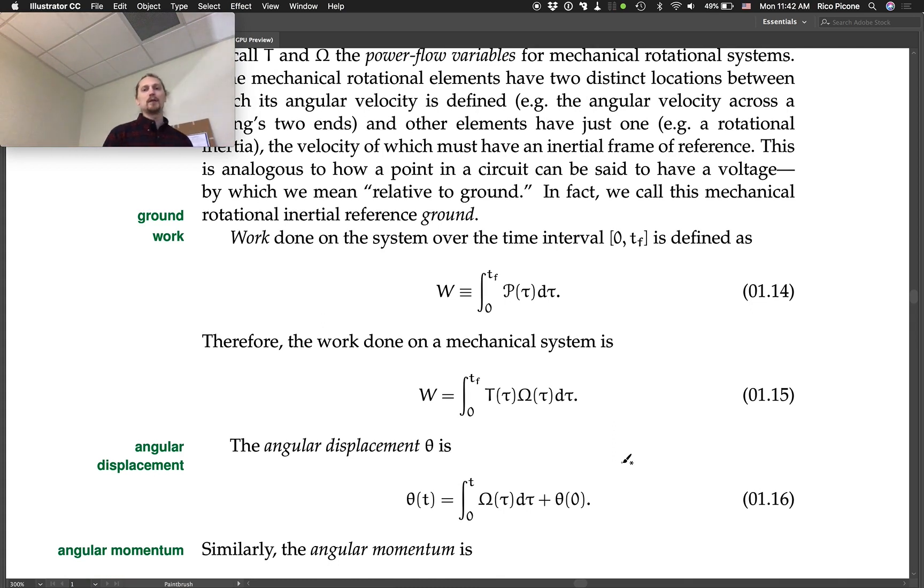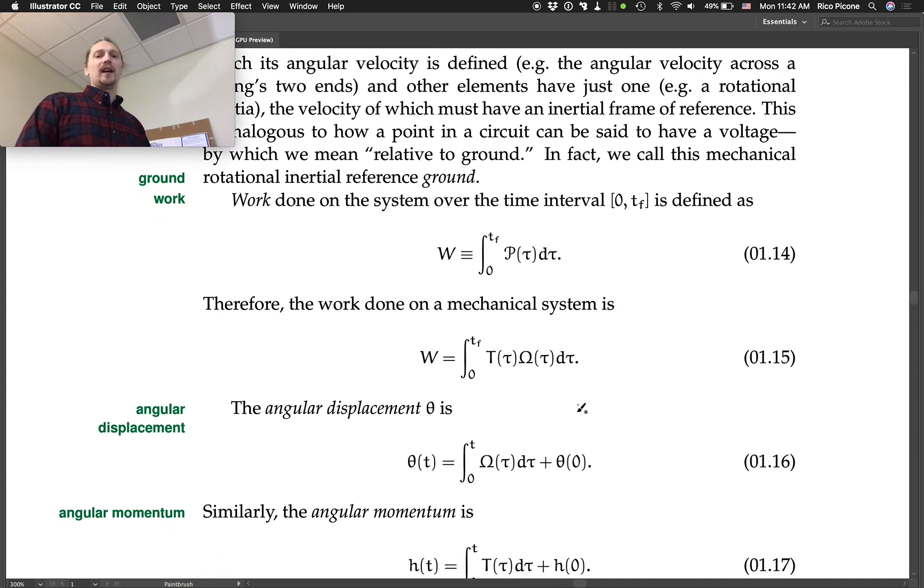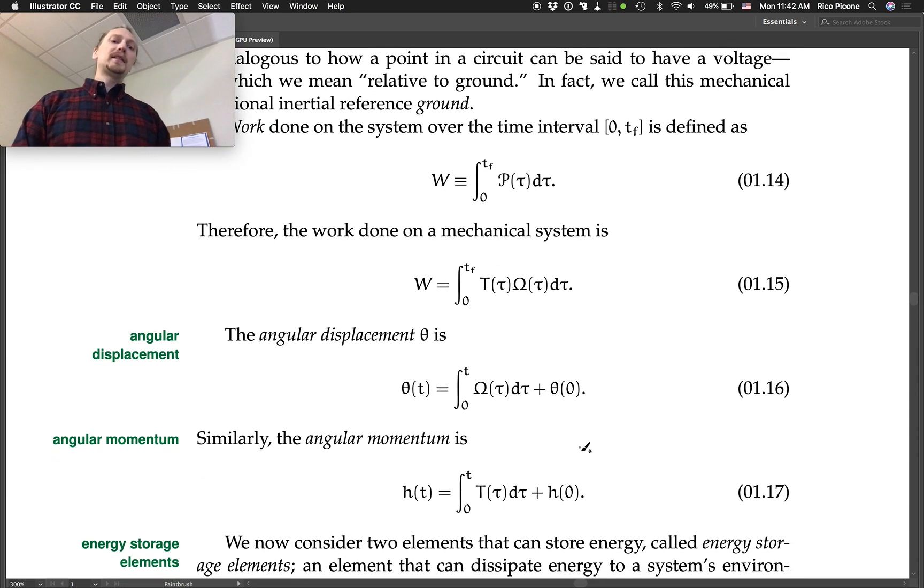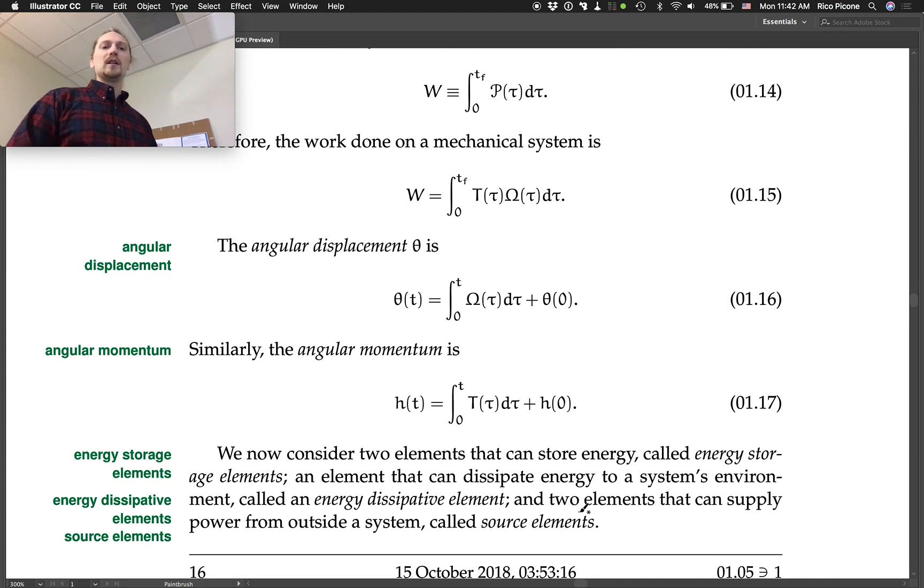Work done on the system over the time interval zero to TF. Don't ask me why I changed it from big T to TF in this lecture. That was just a weird thing that happened at one point in my life. And so if you integrate the power, you get work. And if you expand what power is in terms of torque and angular velocity, you get equation 115. The angular displacement is the integral of the angular velocity, which is another one of these familiar kinematic equations. And similarly, the angular momentum is the integral of the torque.